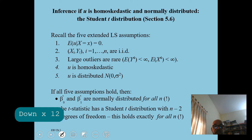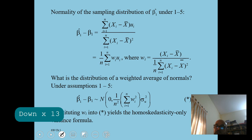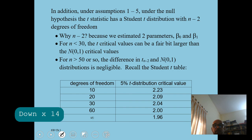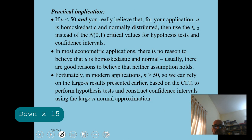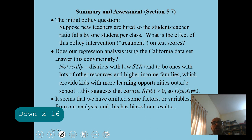If all five assumptions hold — E[u|x]=0, x and y iid, no large outliers, constant variance, and normally distributed u — then beta naught and beta 1 are normally distributed for all n, the t-statistic has a Student's t distribution with n degrees of freedom, and beta 1 is normally distributed with mean beta 1 and a known variance formula. For the central limit theorem to be valid, some say sample size greater than 30, others say greater than 50.